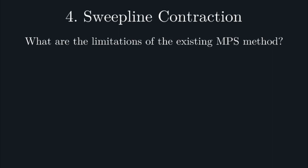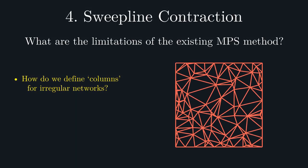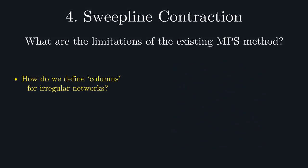Firstly, while one can imagine generalizing the notion of columns to other regular lattices, what about irregular networks, such as random triangulations?